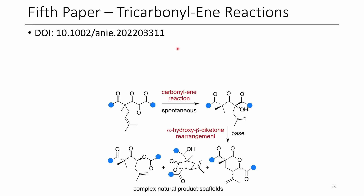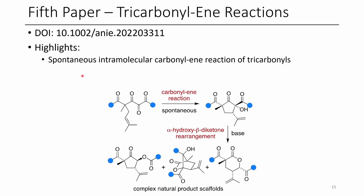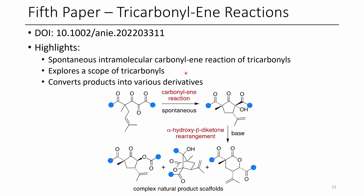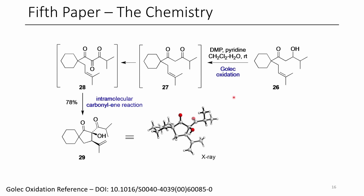The fifth paper is the tricarbonyl-ene reaction. They do an in-situ process to generate a tricarbonyl species, which spontaneously undergoes a carbonyl-ene reaction to form a 1,3-diketo-2-alcohol species. They demonstrate this scope on a range of different tricarbonyls generated in situ and convert those products into a few different derivatives. It utilizes a reaction known as Galic oxidation, where an aldol adduct is oxidized to the 1,3-dicarbonyl, then further oxidized using DMP to a 1,2,3-tricarbonyl species, which then spontaneously undergoes an intramolecular ene reaction.